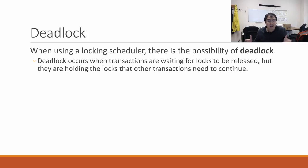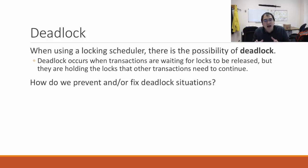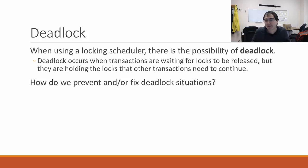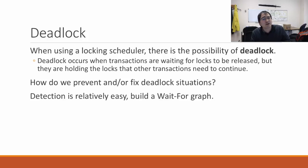This can happen quite often, especially when working with systems where you can get locks on different parts of the database. The question becomes: how do we prevent and/or fix deadlock situations? How do we recognize when they're happening and fix them, or how do we make sure they never happen? Let's start with how do you detect if we're in a deadlock situation.